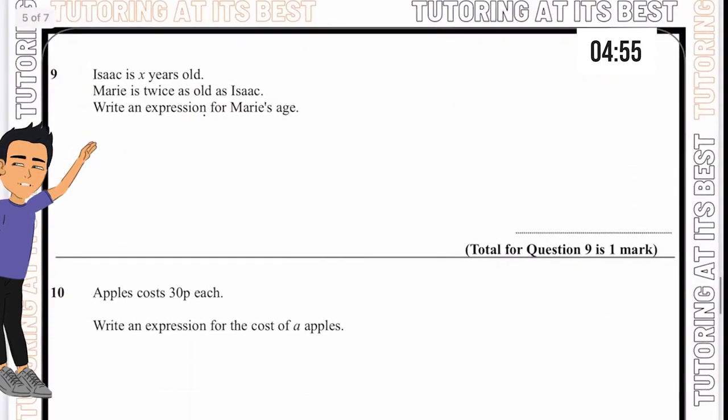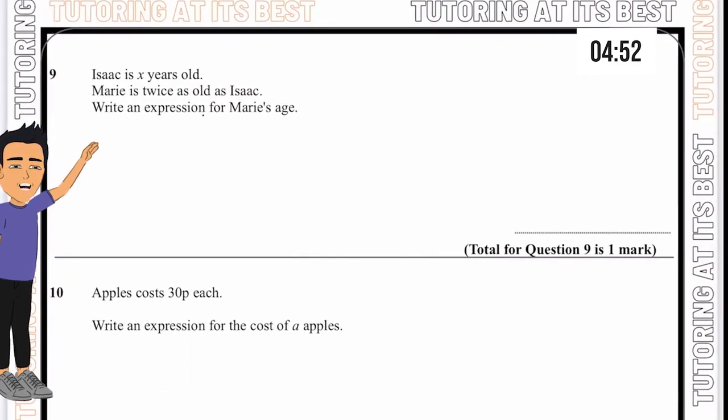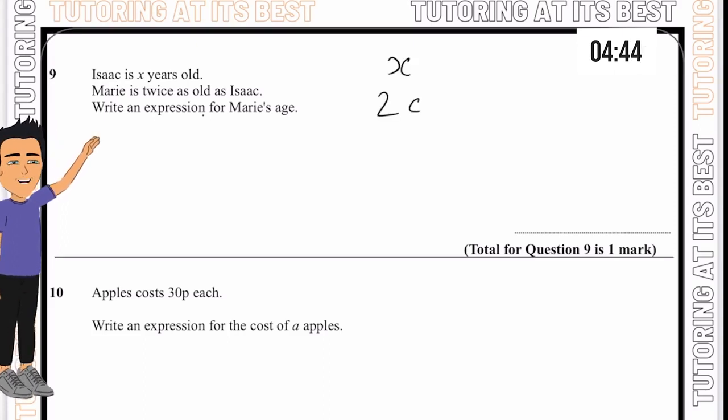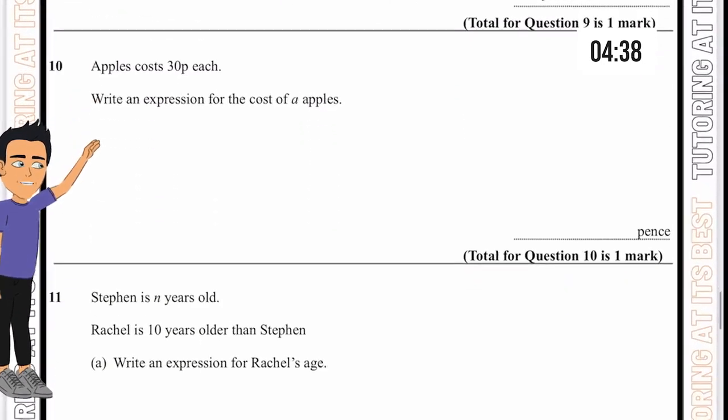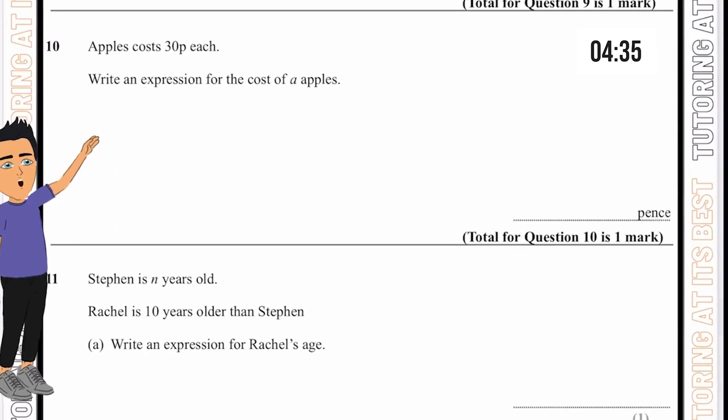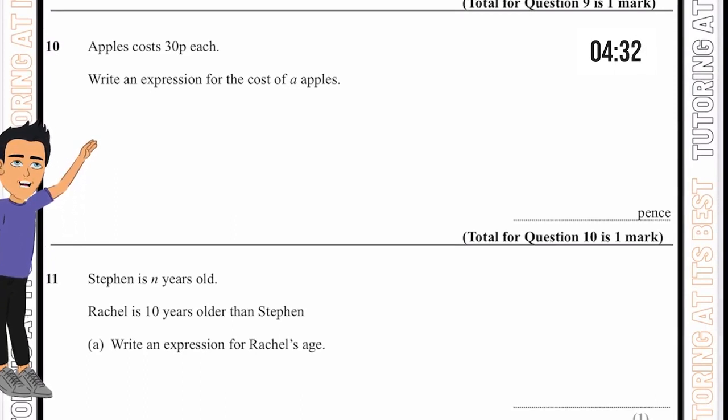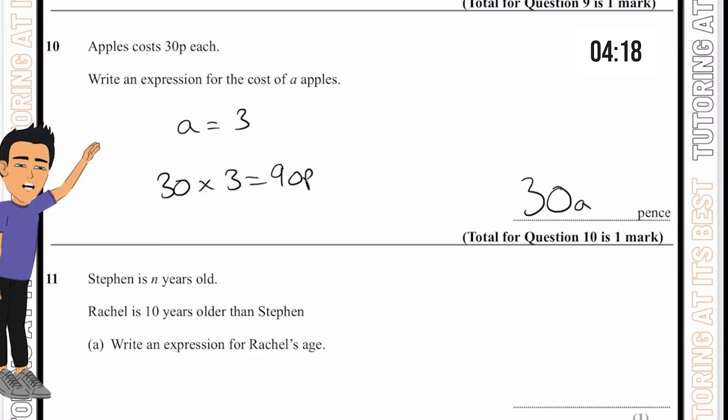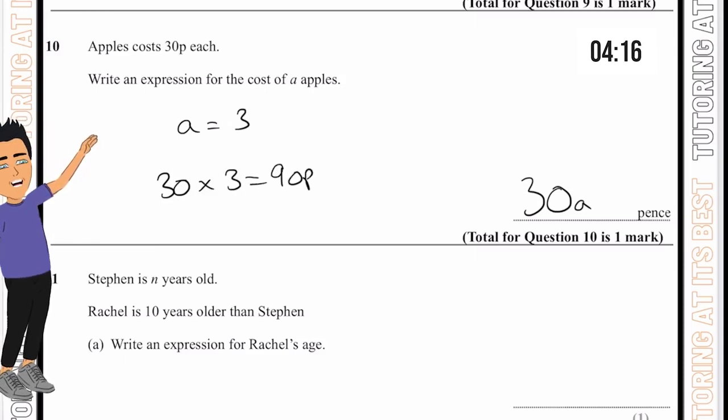Question 9. Isaac is x years old and Mary is twice as old as Isaac. If Isaac is x, twice as old is going to be 2x. Question 10. Apples cost 30p each. Write an expression for the cost of a apples. We could simply say 30a, where a can be any number. If a equals three, we'll have 30 times by three and that's 90p for three apples.